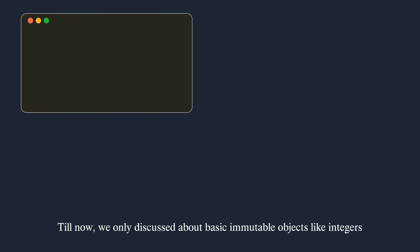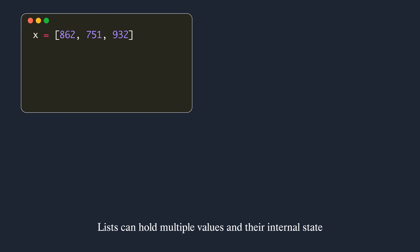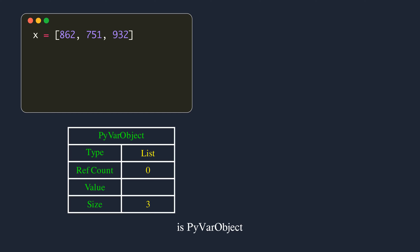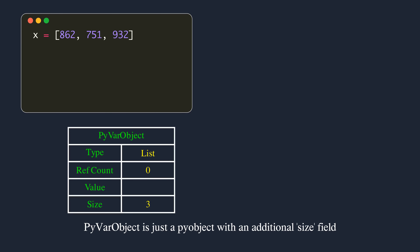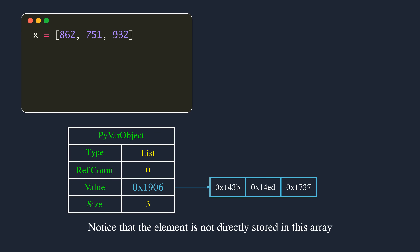Until now we only discussed basic immutable objects like integers — they are immutable because you cannot change their internal state once created. Next, we look at container data types like lists, which can hold other data types and whose internal state can be changed by adding or removing elements. Instead of PyObject, the basic structure for container type objects is PyVarObject. PyVarObject is just a PyObject with an additional size field, which stores the number of elements the container object holds.